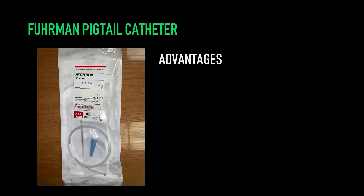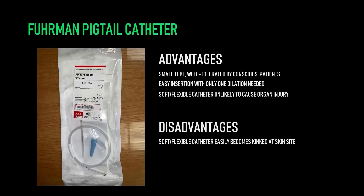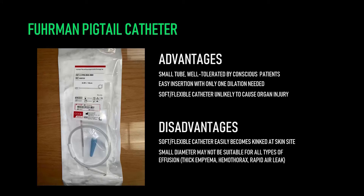The next catheter is the Furman pigtail catheter. It's really small, which can sometimes be an advantage — if I were awake, this is probably the tube I'd want inserted. You only need one dilation because of its small size, and it's soft and flexible, so it's unlikely to cause damage inside the patient's body. However, because it's so soft and flexible, it's very easy to kink off at the skin site, so you have to be careful managing it. The small diameter may also be inadequate for certain types of effusion such as a thick empyema, a hemothorax, or a big air leak from a bronchopleural fistula.